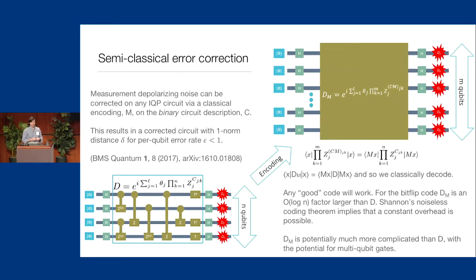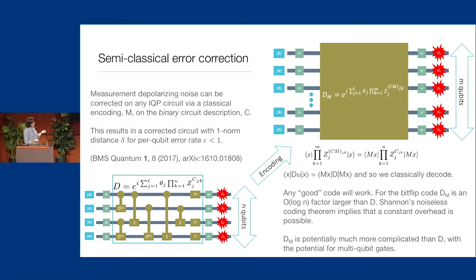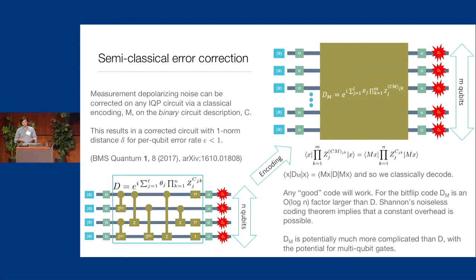For any IQP circuit, you can write down a binary linear matrix C_{j,k} — a matrix of ones and zeros describing where the gates are in the circuit. Each row describes a gate; a T gate corresponds to a one. If you apply a classical error-correcting code to that matrix — multiplying by the generator matrix of the code — you end up with a bigger circuit that has the property that you can use a completely classical decoder. So basically, for any IQP circuit, running a classical error-correcting code on the circuit description will correct this depolarizing noise family. This works specifically because depolarizing noise at the end of these circuits looks like bit-flip errors on the sample space, which are classical errors. Any good error-correcting code will work; Shannon's noiseless coding theorem implies there's a constant overhead, though using a bit-flip code you pick up a log n factor.